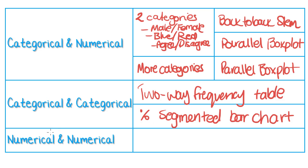And finally, when you have two numerical variables, then that's when you would be drawing a scatter plot. And we'll get onto that in a later tute. We've already covered back-to-back stem plots and parallel box plots in the last couple of tutes, so now we're going to go over two-way frequency tables and percentage segmented bar charts.